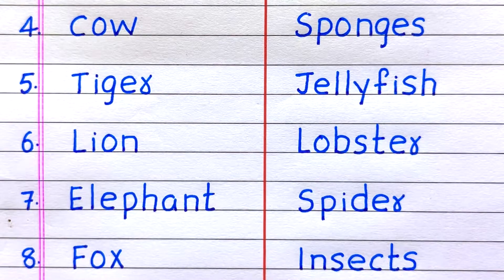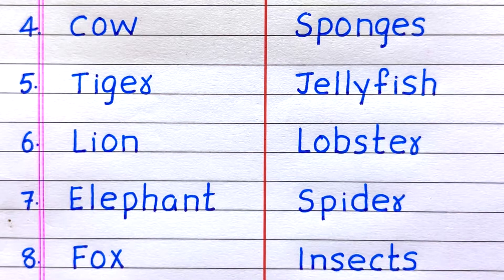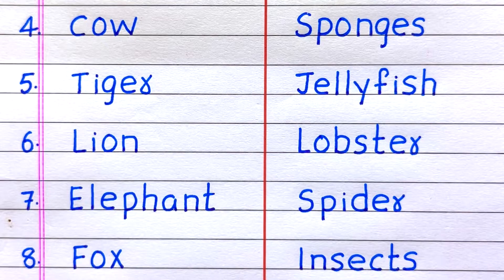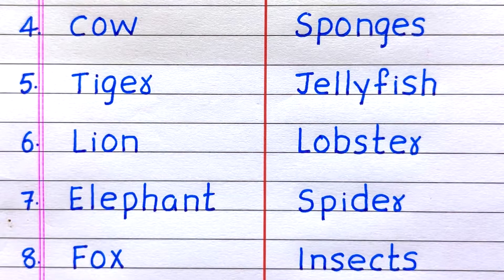Fourth example of an invertebrate animal is sponges. Fifth, jellyfish. Sixth, lobster. Seventh, spider. Eighth, insects.